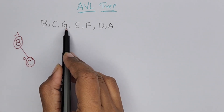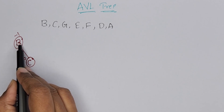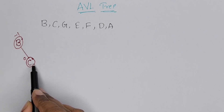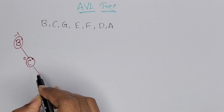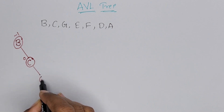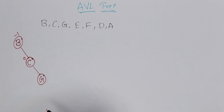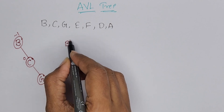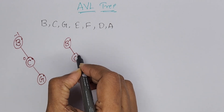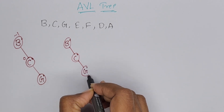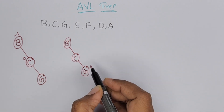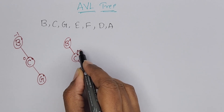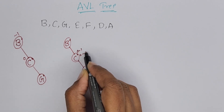Now G. Again, G we have to compare with root. G is greater than B, and again G is greater than C. Right side of C, we have to insert G. Again, we will write balance factors. For G, balance factor is 0. For C, no left subtree, 0 minus 1, it is minus 1. For C, 0 minus 1 it is minus 1.